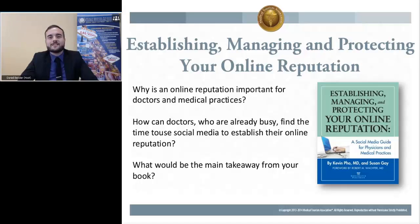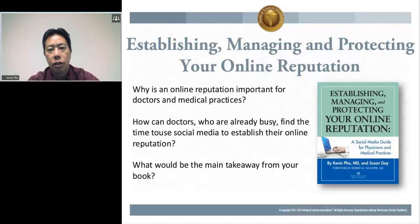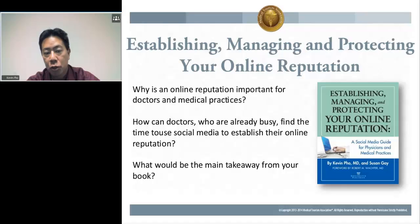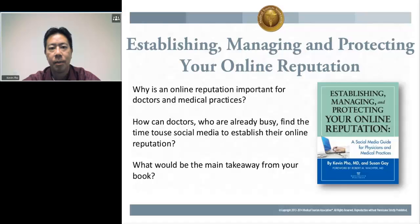So where can listeners get their hands on a copy? Is it available on Amazon or Kindle? It's available on Amazon — you can search for Establishing, Managing, and Protecting Your Online Reputation. You can also go to my website at KevinMD.com, or go to my publisher's website at GreenBranch — G-R-E-E-N-B-R-A-N-C-H — GreenBranch.com slash reputation, and you should be able to find it on any of those sites.